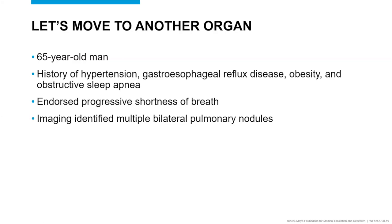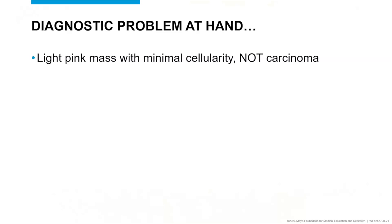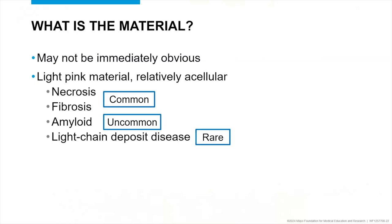Let's move to another organ. A 65-year-old man with a history of hypertension, GERD, obesity, and obstructive sleep apnea was endorsing progressive shortness of breath and found on imaging to have multiple bilateral pulmonary nodules. They decided to do a biopsy — a needle core biopsy of one of those nodules. Looking at this, you can see it's a solid mass of pink with a few giant cells, some inflammation, lymphocytes, and a little bit of more normal lung on the side. It's a light pink mass, not too much cellularity — it's not cancer.